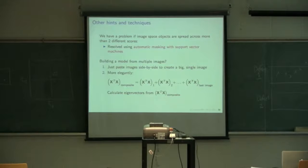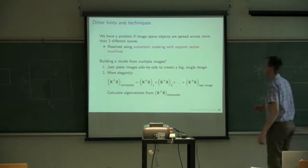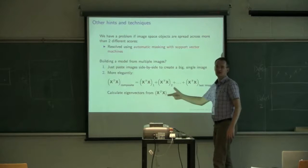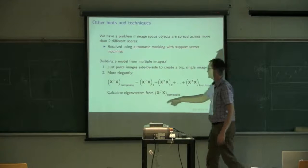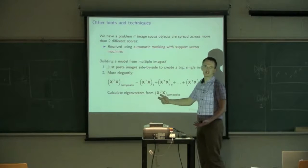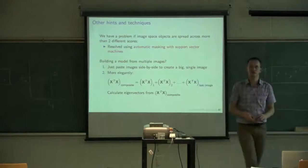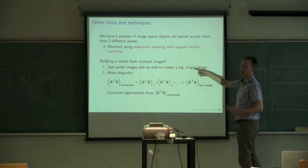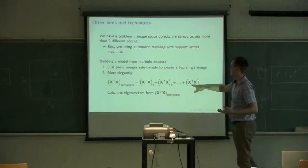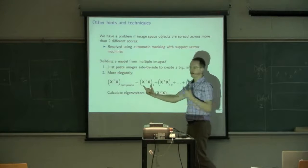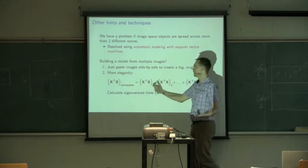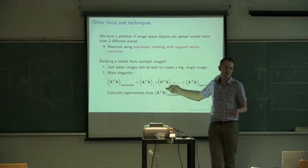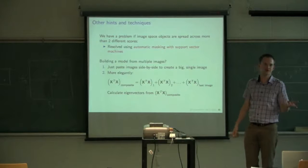And so one trivial way you can do that is you just take your images and you put them side by side or top to bottom, and just create one monster image and put that into the software. That could be perfectly valid. But you can do it far more elegantly by just calculating x transpose x in the first image, add that to x transpose x in the second image, up until the final image, create a composite x transpose x matrix, and then you go ahead and calculate the loadings from that. You'll get exactly the same answer if you do those two. But this one is more computationally efficient.